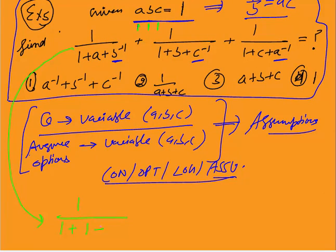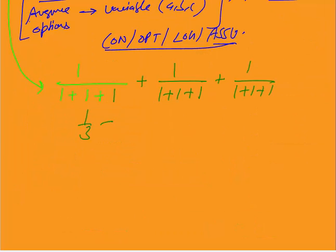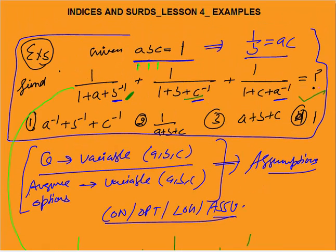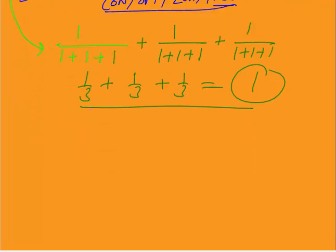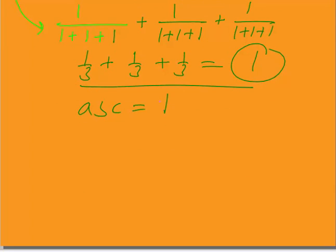With a = b = c = 1: b^(-1) = 1^(-1) = 1, and each term in the expression becomes 1/(1+1+1) = 1/3. Adding all three terms: 1/3 + 1/3 + 1/3 = 1. The answer is 1. You can also assume a = 2, b = 1, c = 1/2 (so abc = 1 still holds) — you will again get the answer 1.